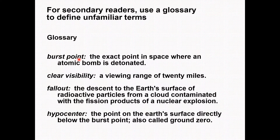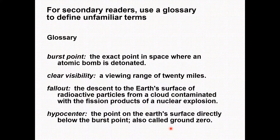For a research article, it is best to define abbreviations and terminology at the start of the introduction, or wherever you first use them. The standard practice is to define such terms when you first use them in the introduction section. For example: 'clear visibility' means a viewing range of 20 miles; 'fallout' means the descent to the Earth's surface of radioactive particles from a cloud contaminated with fission products of a nuclear explosion; 'hypocenter' means the point on the Earth's surface directly below the burst point, also called ground zero.